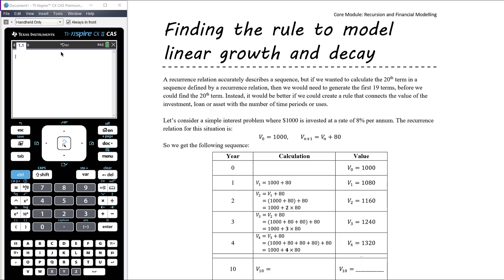A recurrence relation allows us to build up a sequence of numbers. For example, with a simple interest investment, if we want to know how long it takes for the investment to be worth $20,000, we have to keep applying the recurrence relation until we reach $20,000. If we want the value after 50 years, we'd have to recur the relation 50 times.